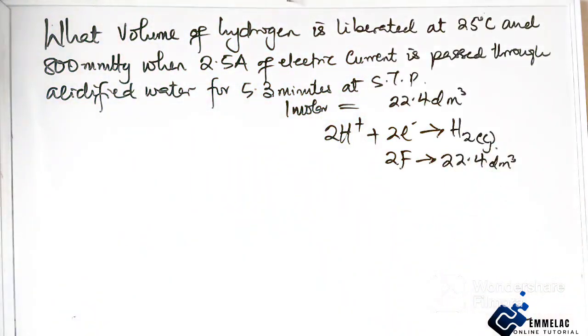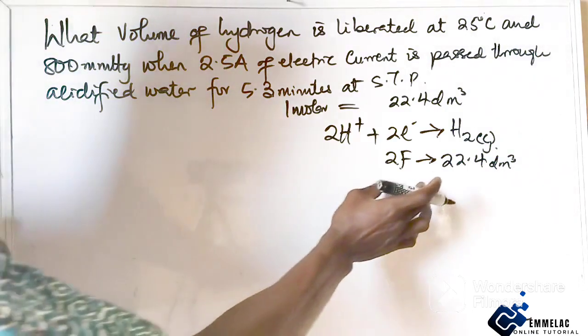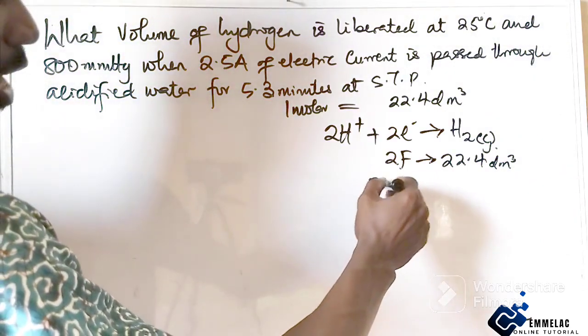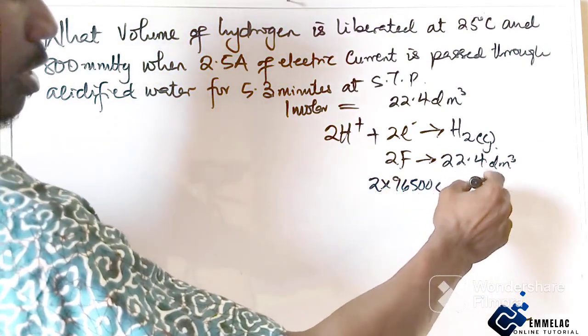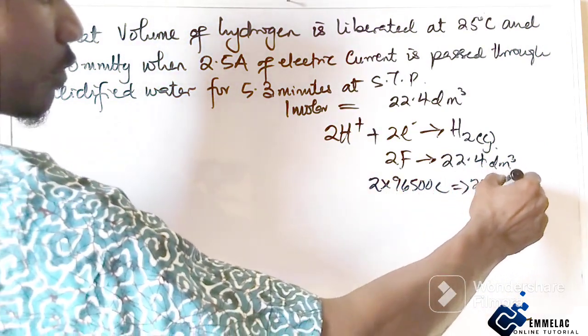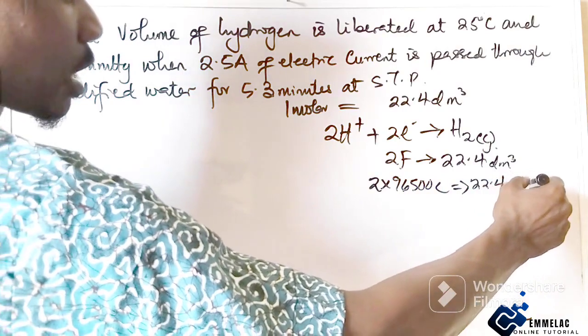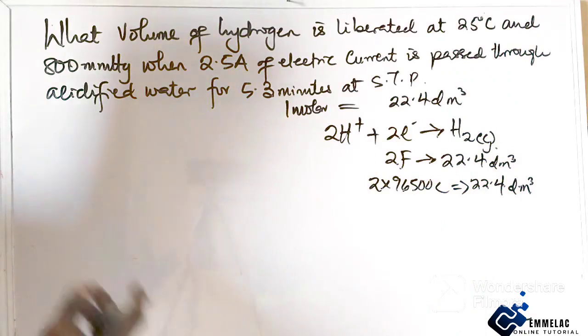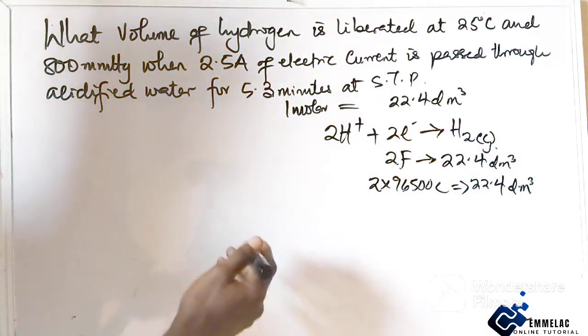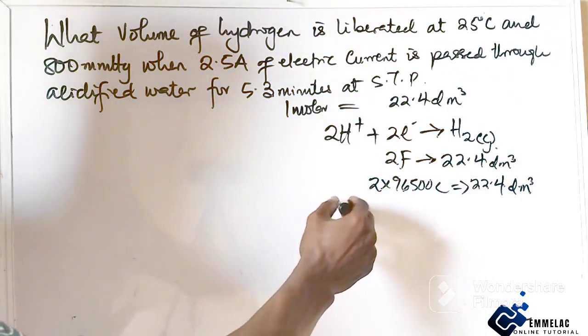So with this effect, now let us find the quantity of electricity. We can see here that two times 96500 coulombs gives 22.4 decimeter cube of hydrogen gas.